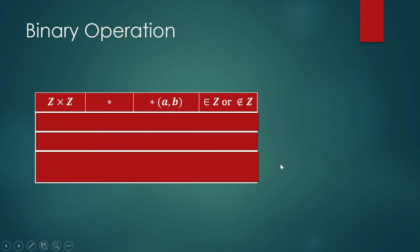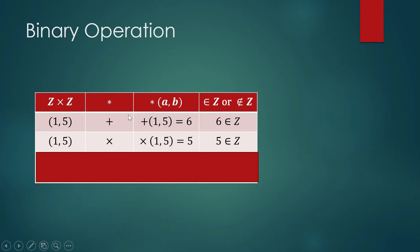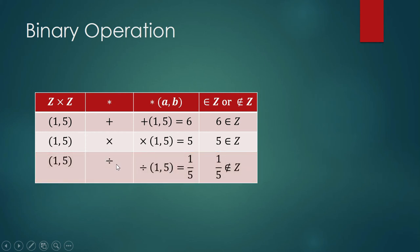Consider the cross product Z cross Z. We apply an operation on integers and check if the result is also an integer. Take the ordered pair (1, 5) — applying addition gives 6, which is an integer. Applying multiplication gives 5, also an integer. Applying division gives 1/5, which is a decimal number — it is not an integer.